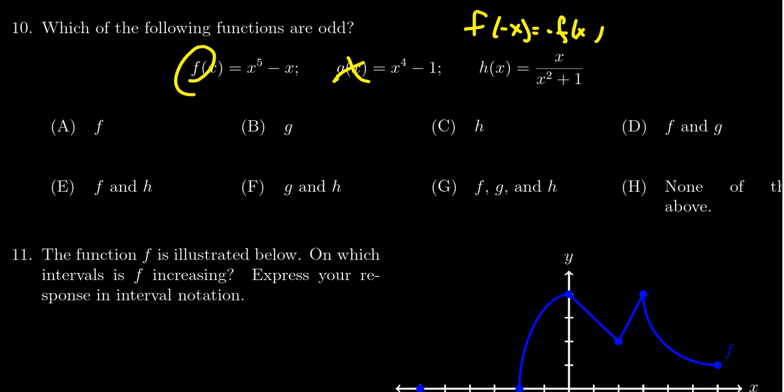So detecting even and odd functions with polynomials, that is you just have some combinations, sum or differences of powers of x, maybe some coefficients. Polynomials are very easy to detect.